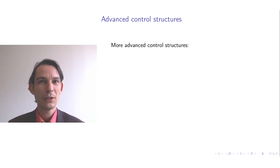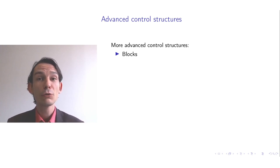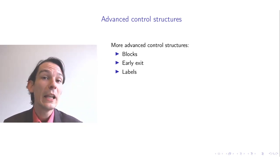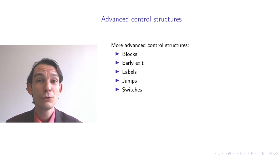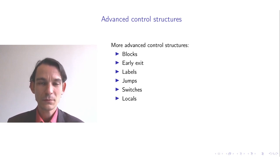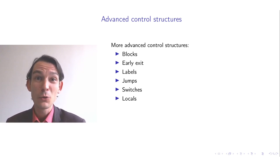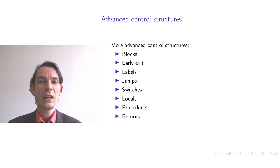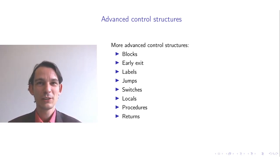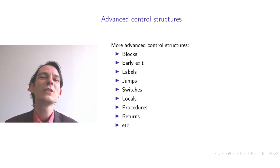Which other control structures can you imagine? Maybe you have already seen some in certain programming languages. We have the notion of a code block and the notion of an early exit. You can also label commands and then use those labels to do jumps. There are also computed jumps using switch commands. In this video I will cover locals, local variables — needed for explaining procedures — and returns from procedures.